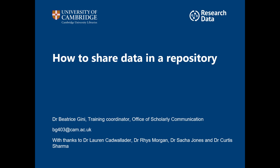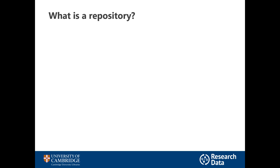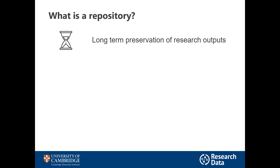The first thing you're going to need is a repository. That is really an online space that's dedicated to the sharing and long-term preservation of research outputs, including publications and other things, but most importantly for us today, data. It's different sharing data in a repository compared to any other website or a journal website because repositories are dedicated to this function and therefore add some elements that you might not find elsewhere.